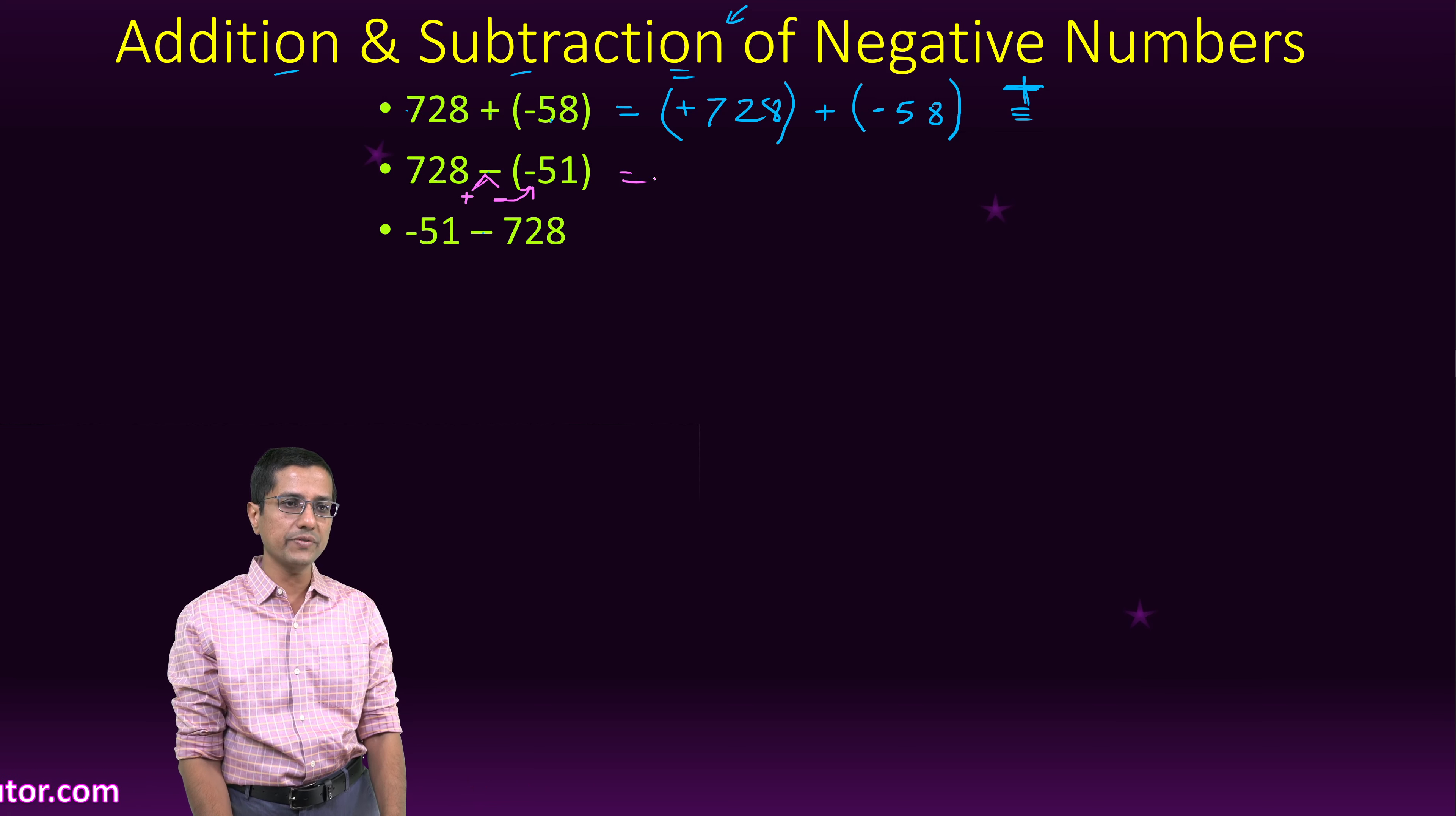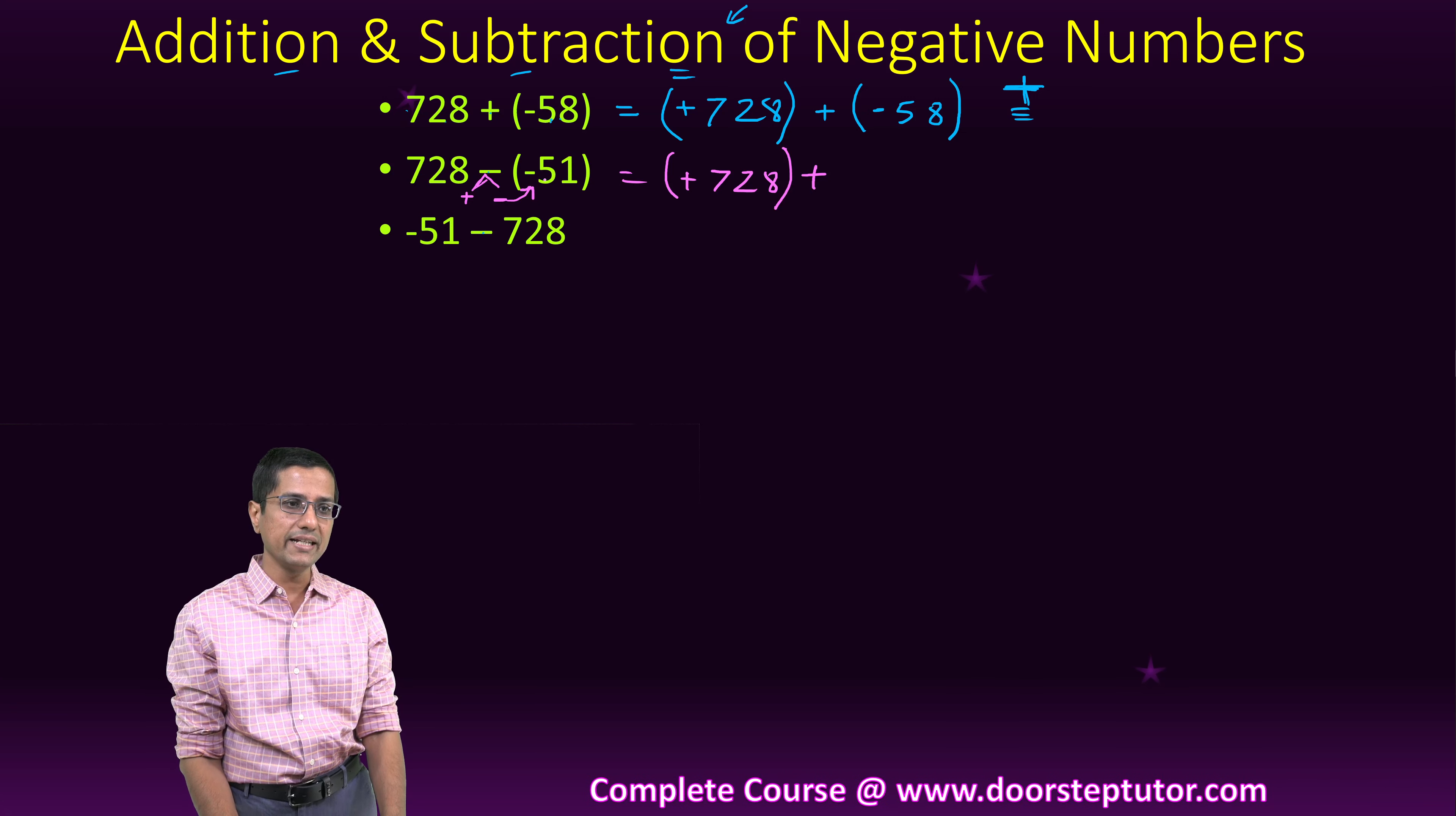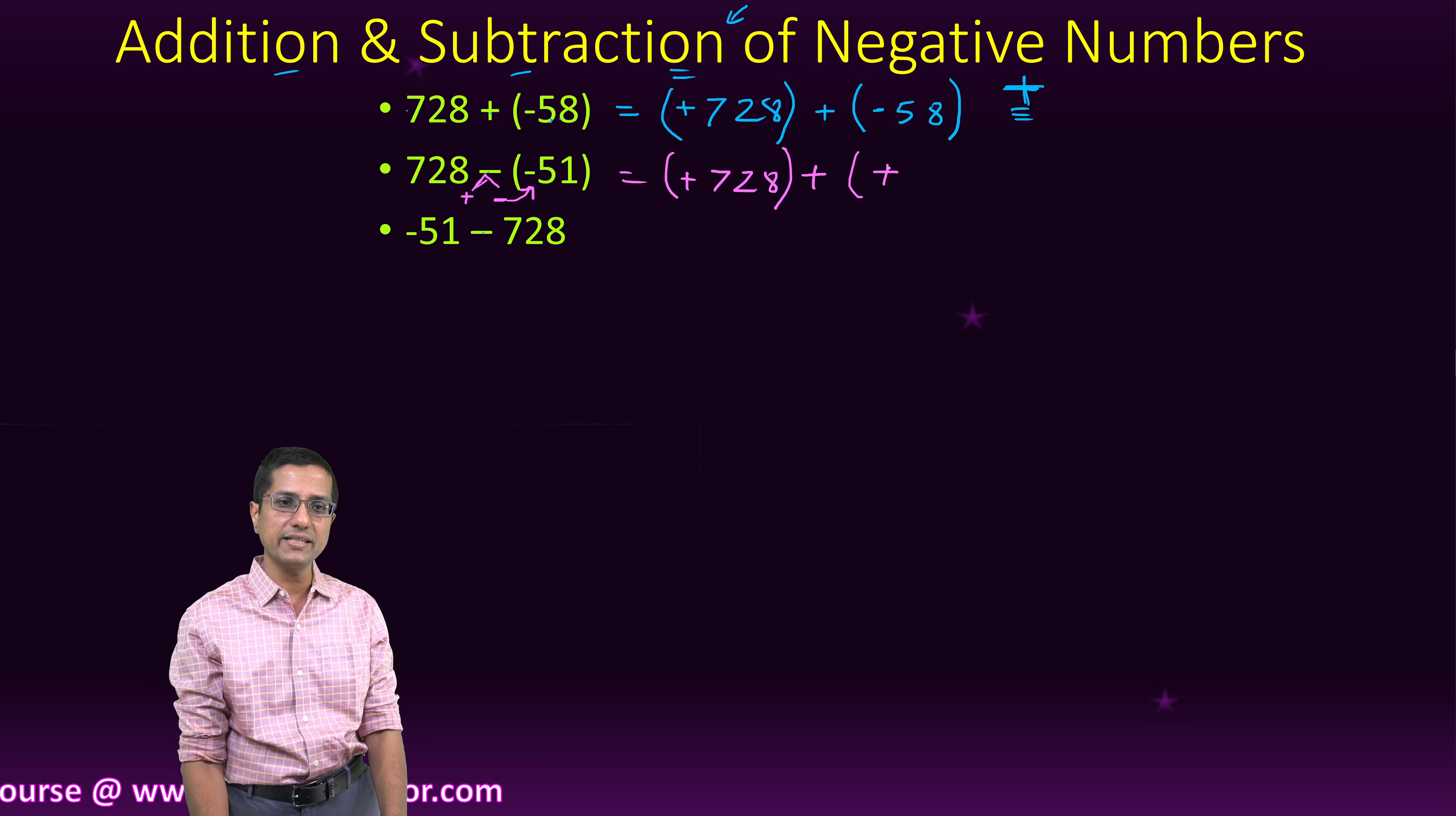So this becomes plus 728. This plus remains here. And this minus actually moved inside the bracket. So this becomes minus minus 51, which is nothing but two minuses. They combine together to give plus 51.